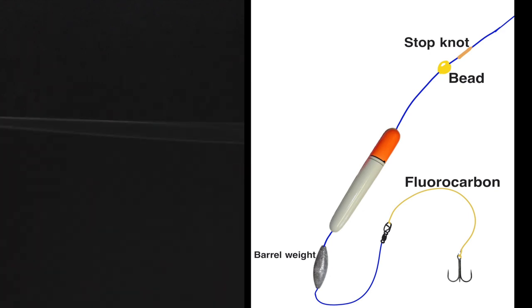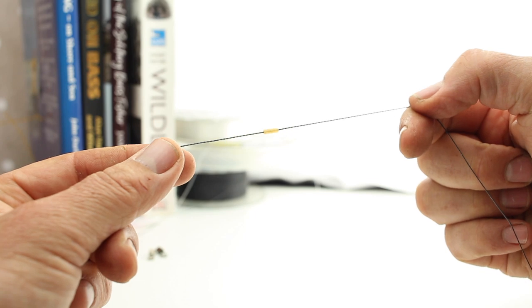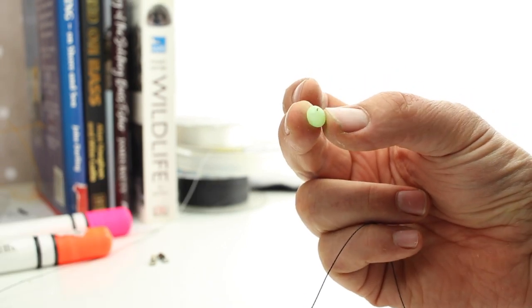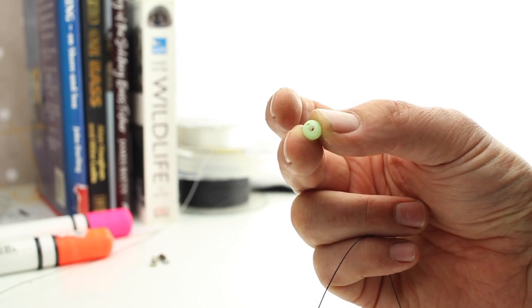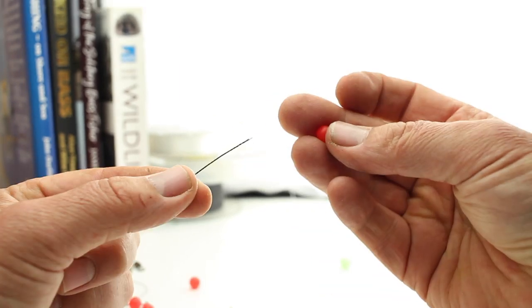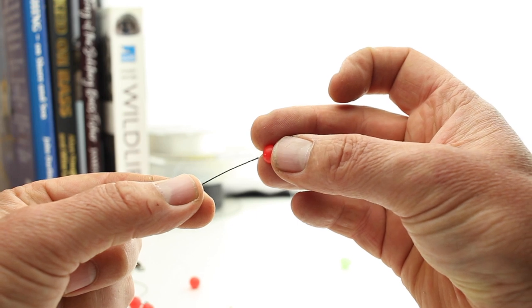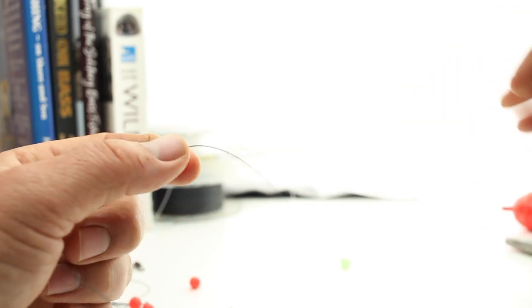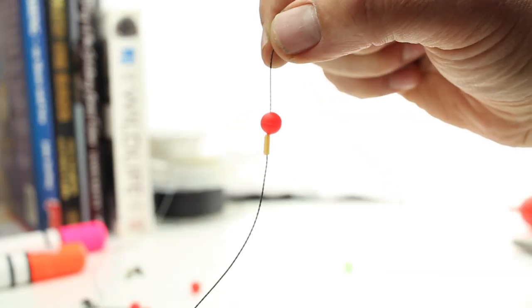We have used power gum in the past for that, but this is a little bit neater. Then you've got to choose your bead. Make sure the bead doesn't have a big hole like that, or it'll simply go over the stop knot. Then you're going to take your bead onto the end of the main line. Poke the line through, whether that's your main line of monofilament or braid, and then it sits there. That way the float, when it goes underneath that bead, isn't going to slide up the line.